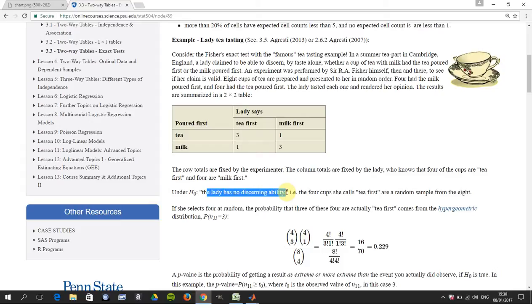And H naught is the lady has no discerning ability, in other words she's just making it up as she goes along. Okay so H naught is there's no link between rows and columns, Ha there is a link between rows and columns and I'm leaving out the theory here of the hypergeometric distribution.